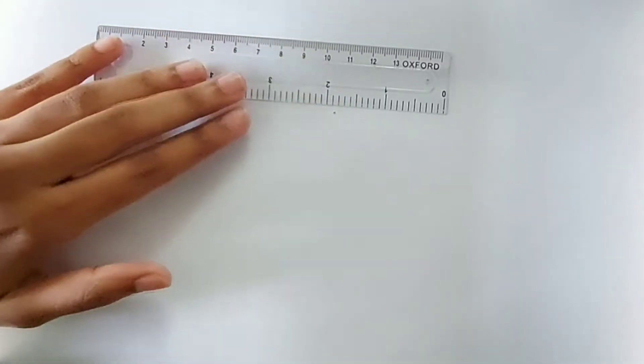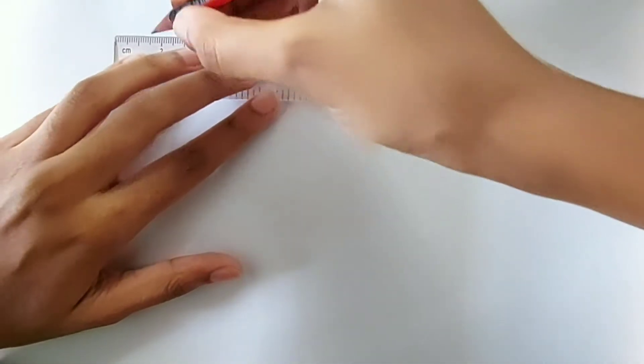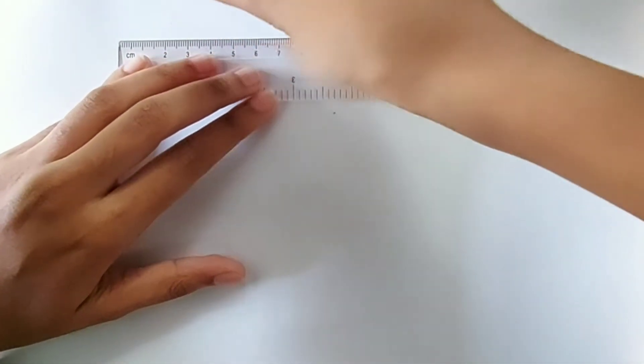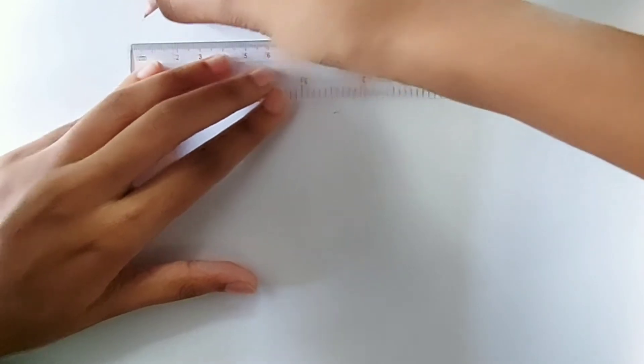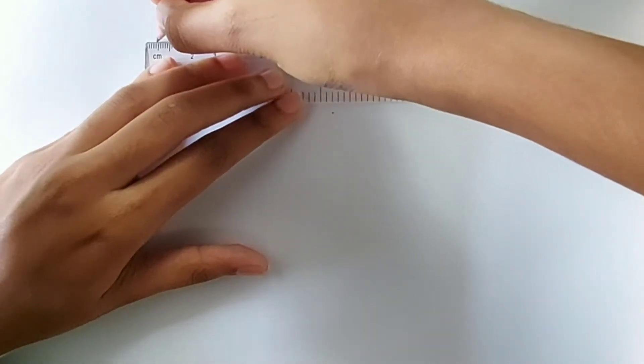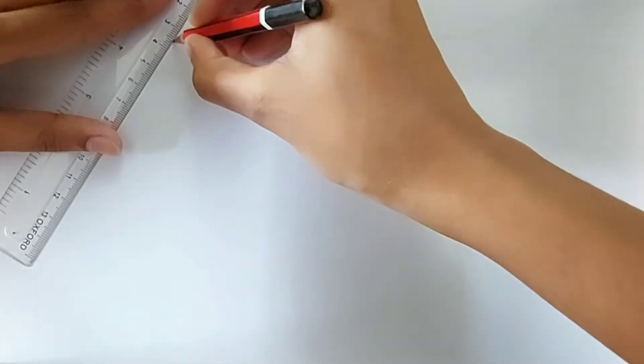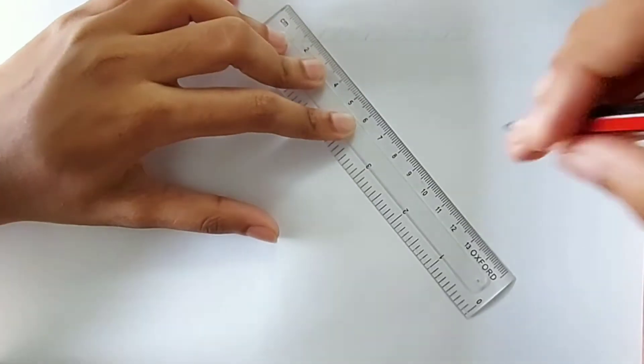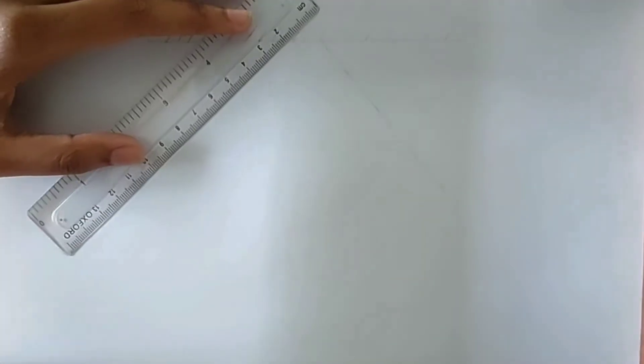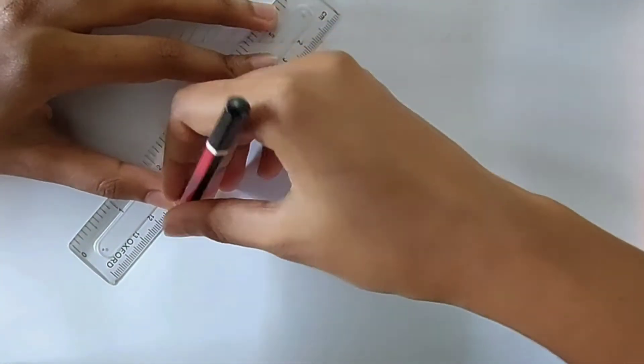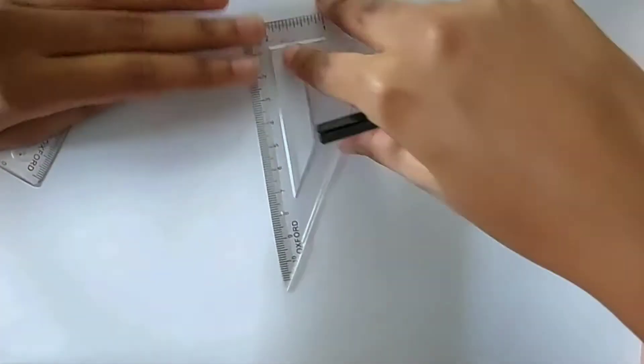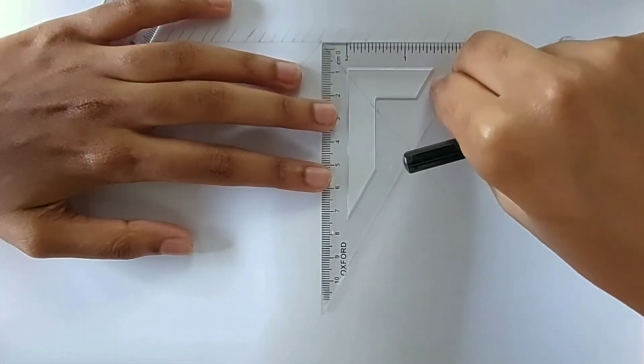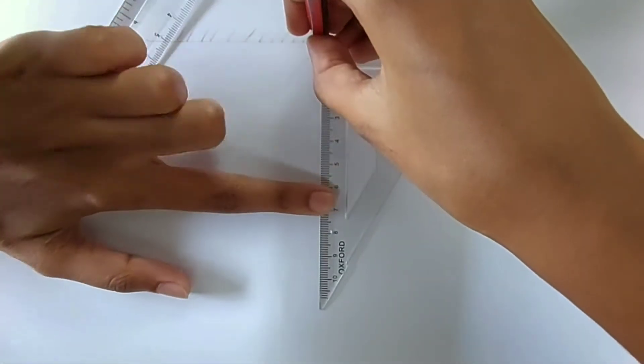First, we are going to draw a plane mirror. Next, the incident ray. Now, the reflection ray. This perpendicular line is called the normal line.